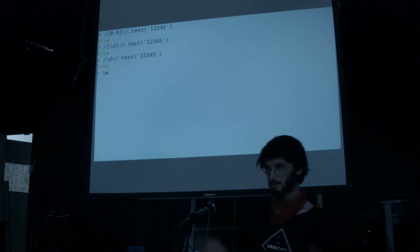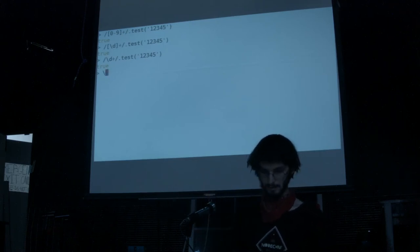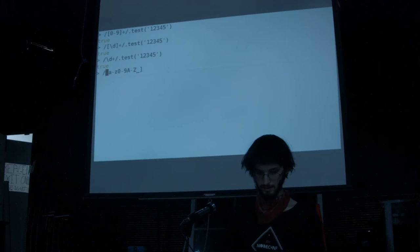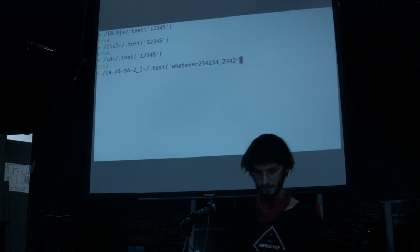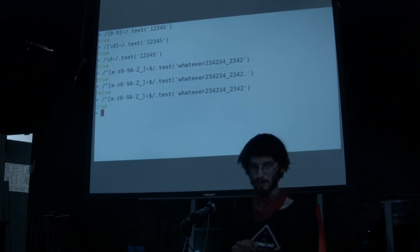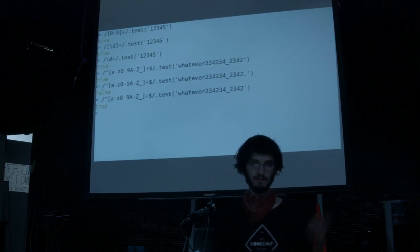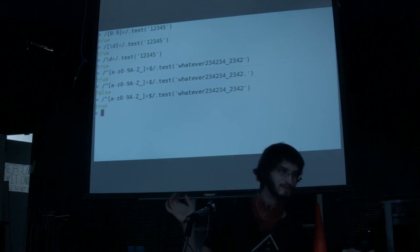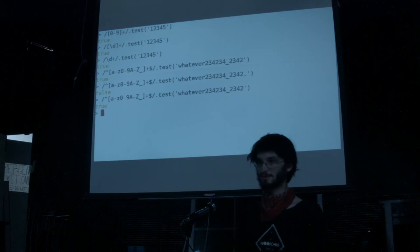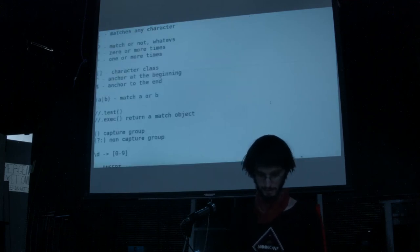There's also backslash W, which means A-through-Z, zero-through-nine, capital A-through-Z, and underscore. If I anchor that to the start and to the end and test it, it's true. The reason underscore is in there with A-through-Z and zero-through-nine is that this is a really common pattern for matching variable names in programming. Programmers decided that was important enough to have a very terse shorthand for. So that's backslash W.